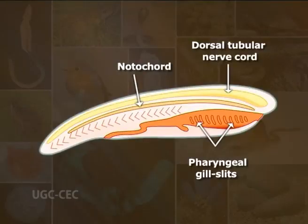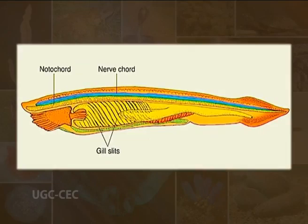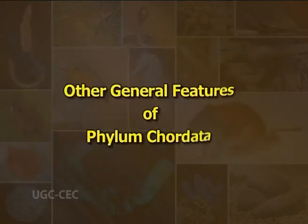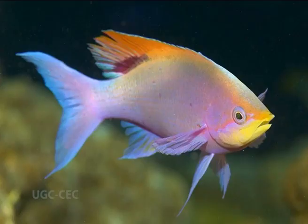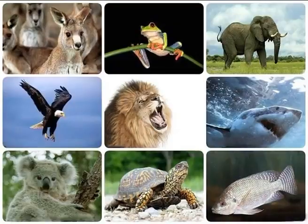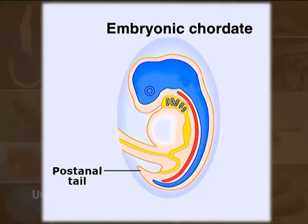These three common characters appear during early embryonic life of all the chordates but rarely persist in the adult, as in Branchiostoma. Other general features of phylum Chordata include: aquatic, aerial or terrestrial; all are free living with no fully parasitic forms; body is small to large, bilaterally symmetrical and metamerically segmented; a post-anal tail usually projects beyond the anus at some stage of life and may or may not persist in the adult.